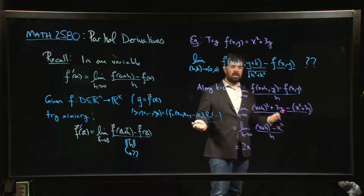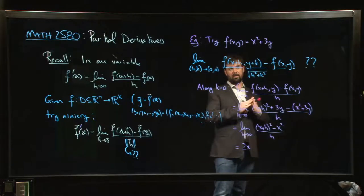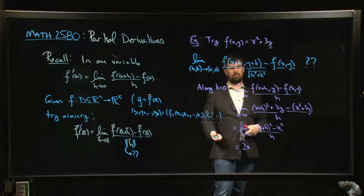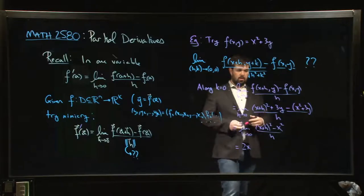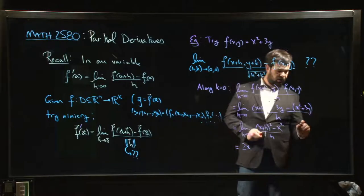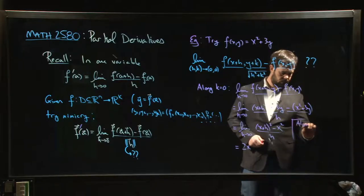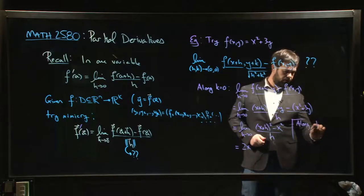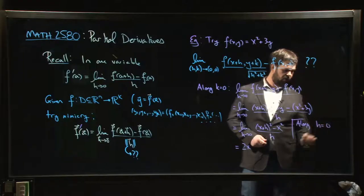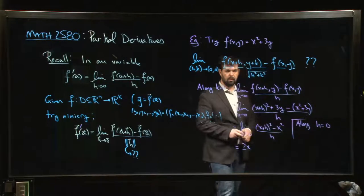So really what happened here is we held y constant and then we kind of took the derivative with respect to x. You could do the same thing along a line that's parallel to the y-axis, so you could take h equal to zero.